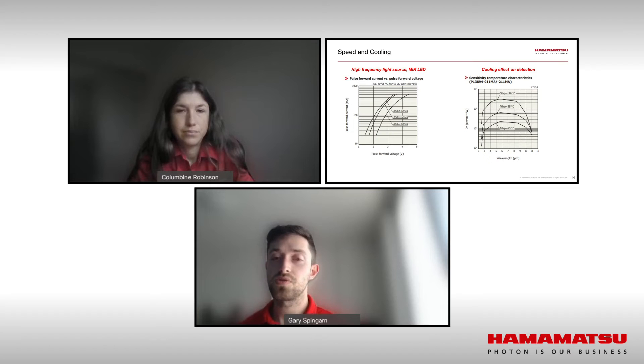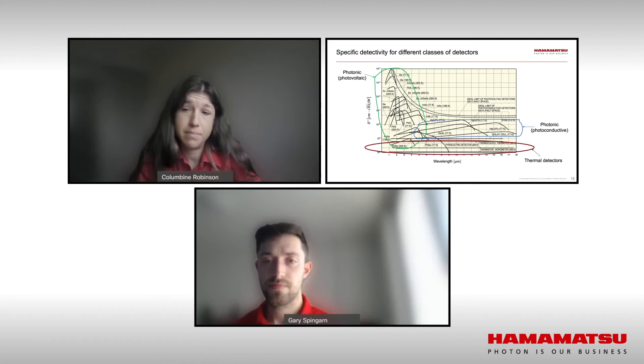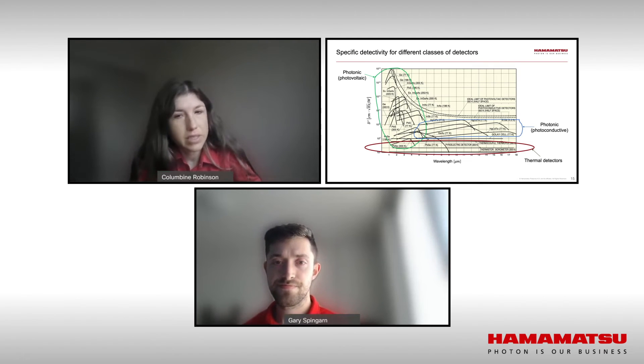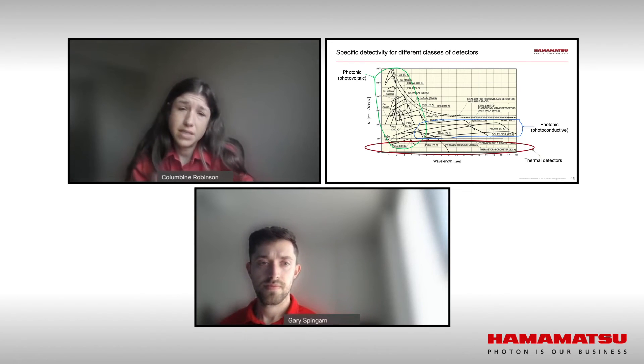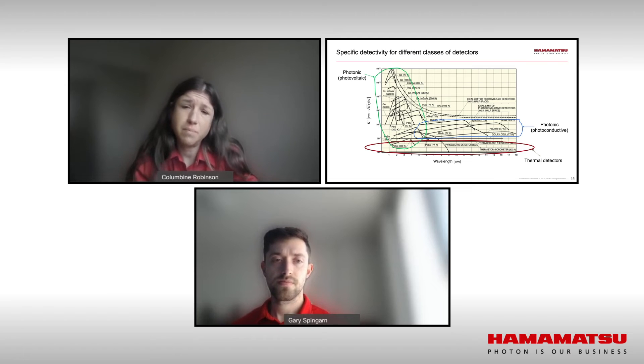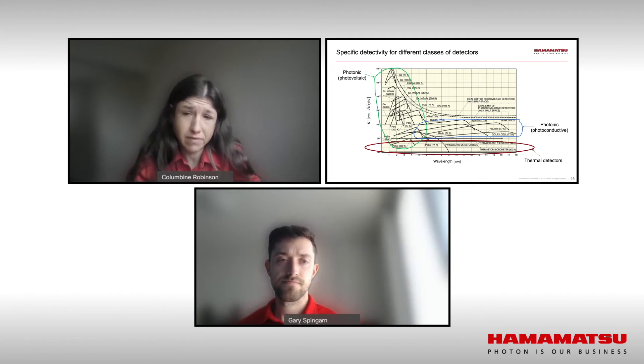So going back to thermal and photonics, which is a very common question I run into, now that we know what performance specifications people should look at, Columbine, can you give us a high-level description of how these technologies compare? Yeah, sure. So if we're comparing thermal versus thermal, the main choices are thermopiles and pyroelectric. Some things to take into consideration when designing a system is that thermopiles can be DC-coupled, whereas pyroelectric detectors typically are AC-coupled, which requires a more complex circuit. Another thing to take into consideration is that thermopiles have a flat sensitivity curve across the mid-infrared wavelength region, whereas for pyroelectric detectors their d-star varies with wavelength but is generally higher. They both tend to have low cutoff frequencies.